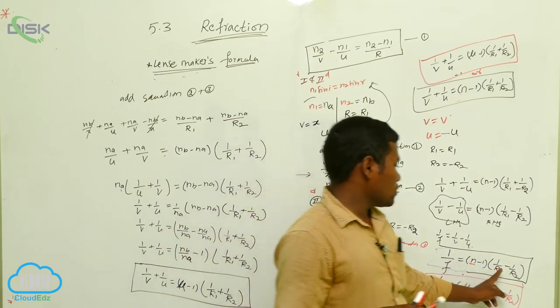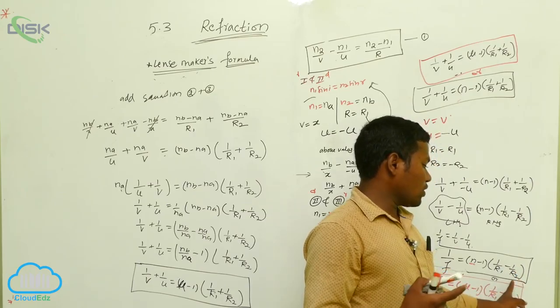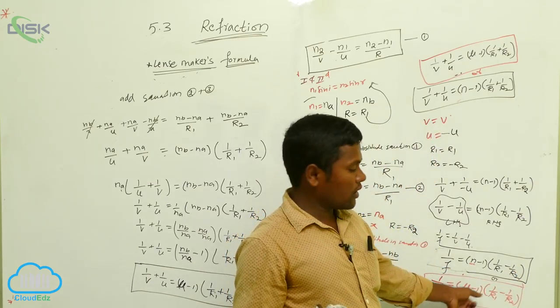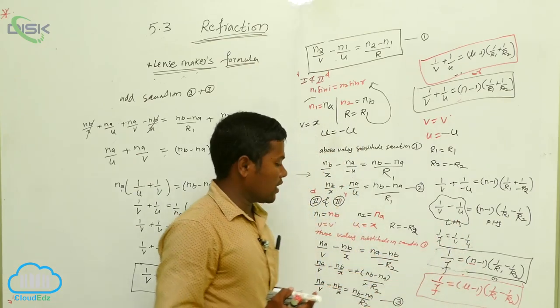So r1, they will give radius of curvature. Next, r2 also they will give. Or else, mu also, no problem, both are same. Only n1, nb by na also, or n2 by n1 also. This total derivation belongs to the lens maker formula.